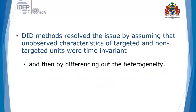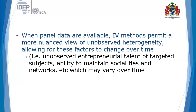In DiD methods, this issue is resolved by assuming that unobserved characteristics of targeted and untargeted units are time-invariant and are differenced out by the DiD procedure. When panel data are available, instrumental variable methods permit a more nuanced view of unobserved heterogeneity, allowing these factors to change over time — for example, unobserved entrepreneurial talent or ability to maintain social networks.